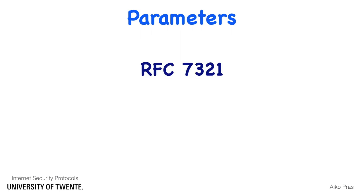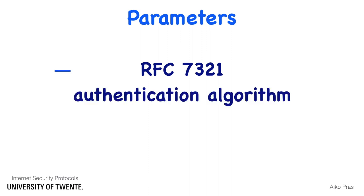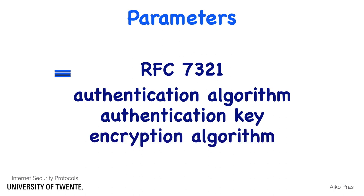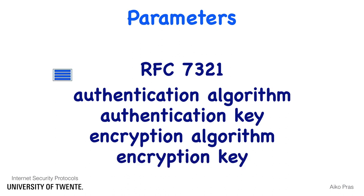The main security parameters tell which authentication algorithm is used — for example, HMAC-SHA1-96 — and what is the authentication key for that algorithm. They also specify which encryption algorithm is used — for example, AES-CBC — and what is the encryption key for that algorithm.